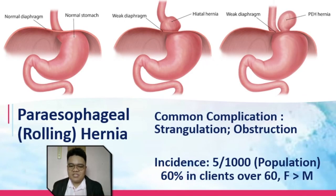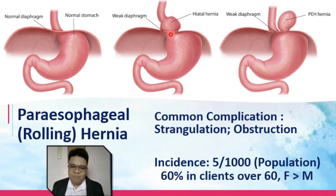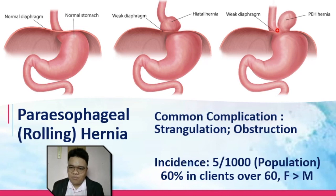Then you have your paraesophageal hernia, also known as your rolling hernia. Rolling hernia happens when the gap in the phrenoesophageal portion of the stomach herniates into the chest alongside the esophagus. This area is referred to as the phrenoesophageal portion, and a portion of the stomach herniates into the chest alongside the esophagus.